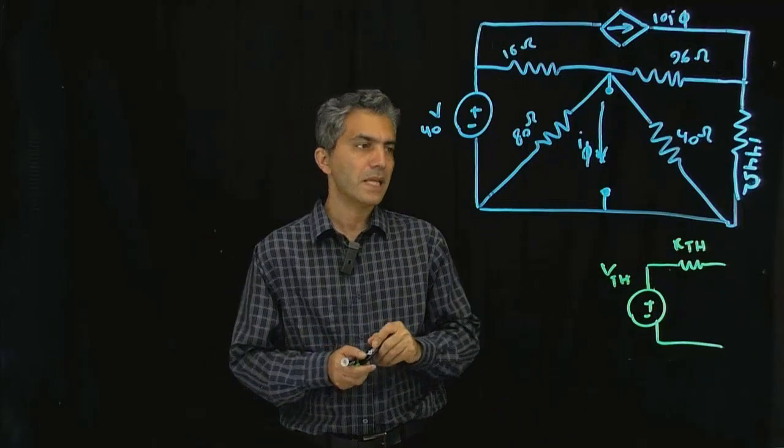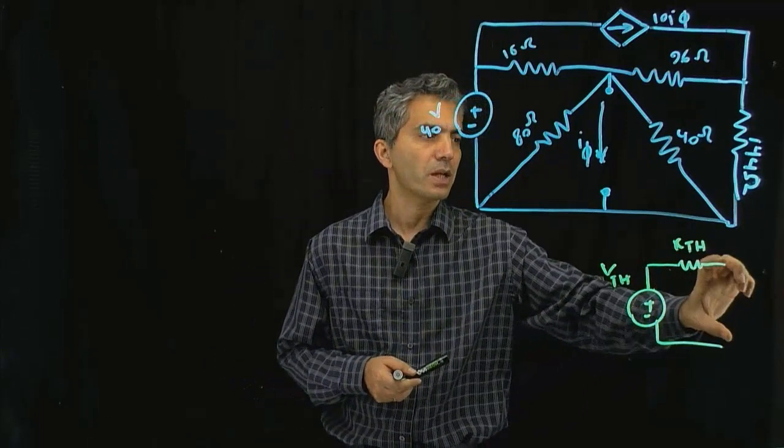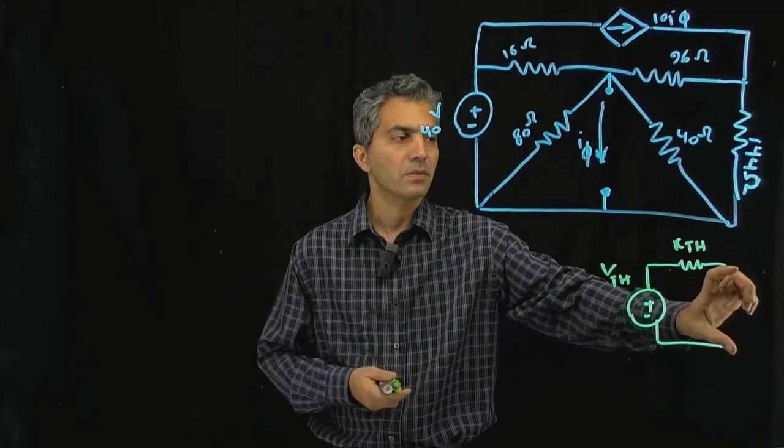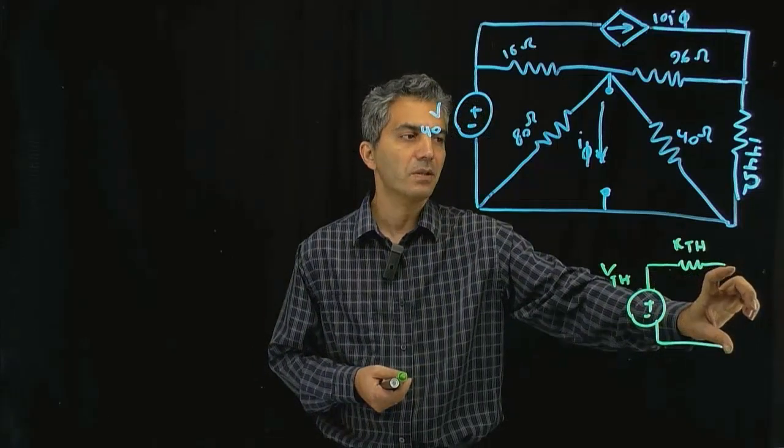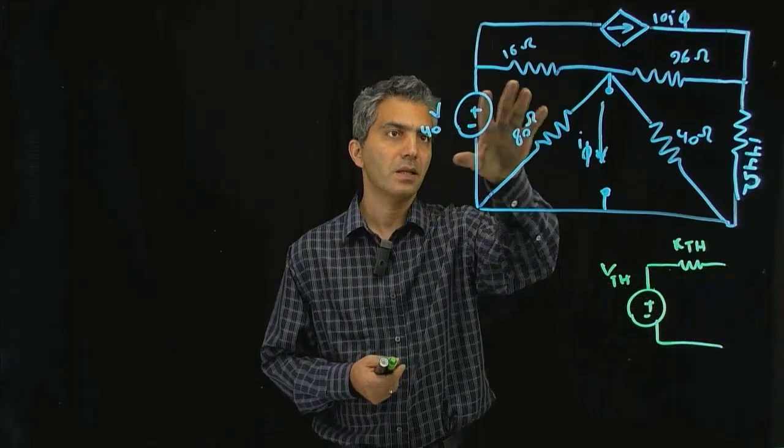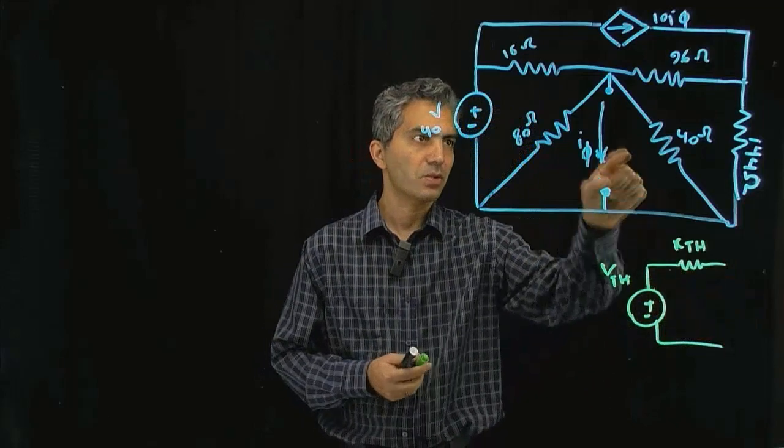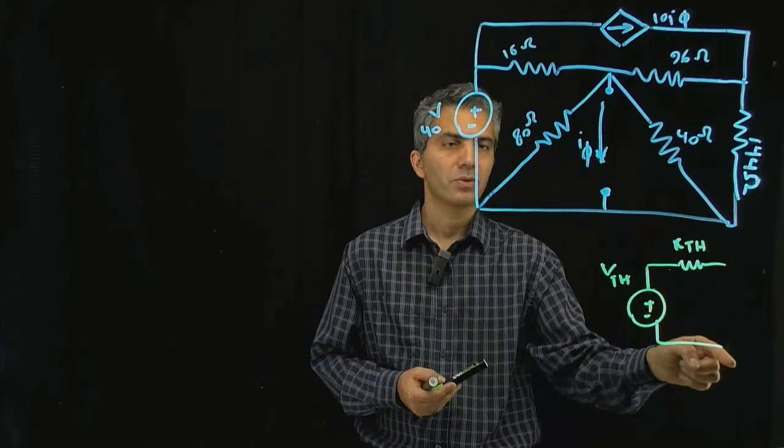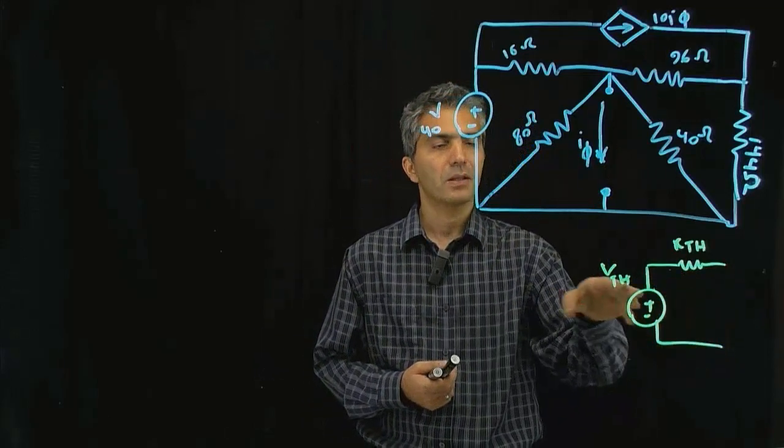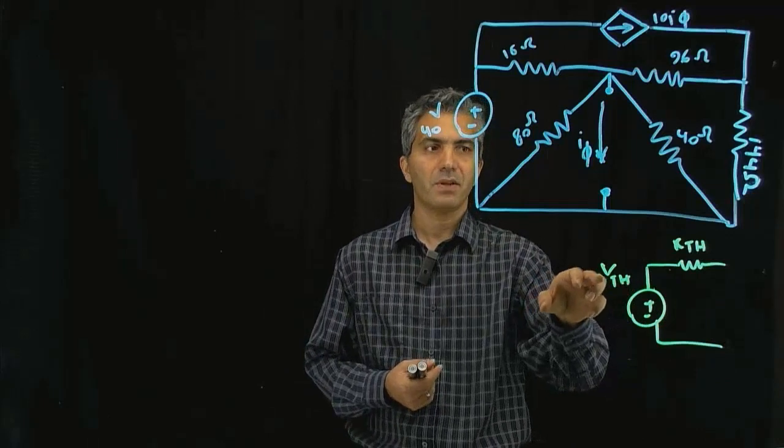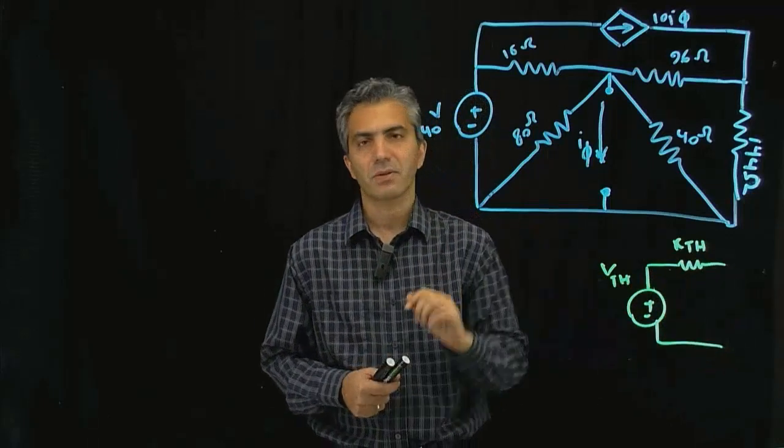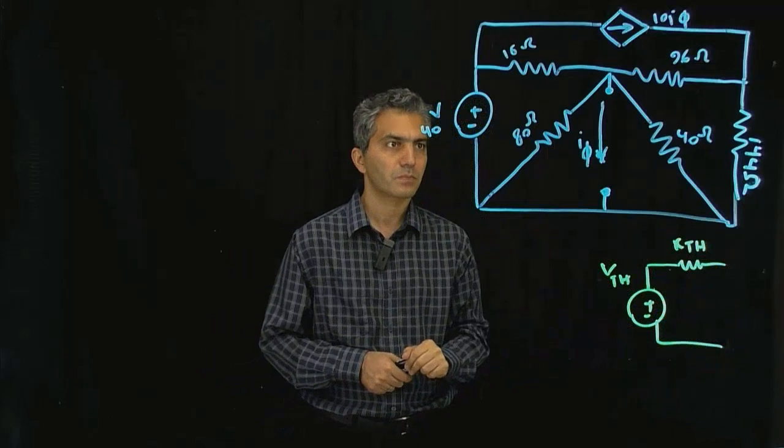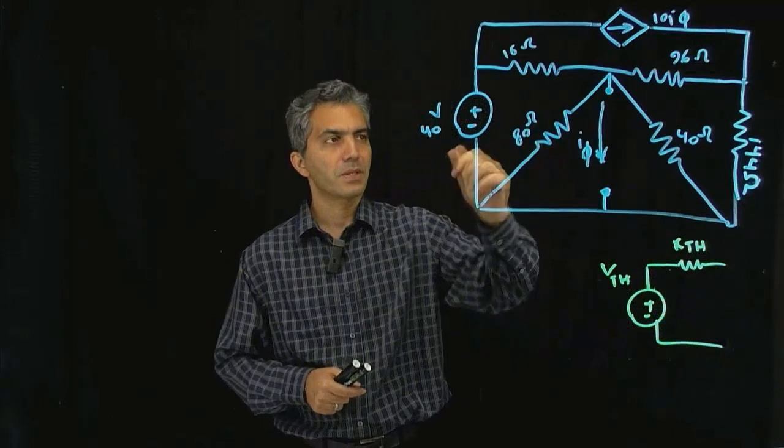We leave the two terminals open, calculate the open circuit voltage of the two terminals and that would be V_Thevenin. Then if there are any independent sources, we can short-circuit the two terminals and look at the current and take the voltage Thevenin divided by short-circuit current to calculate R_Thevenin.